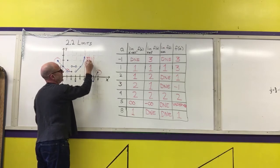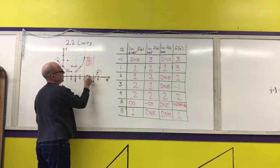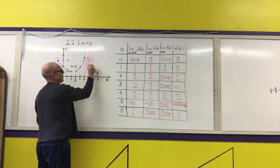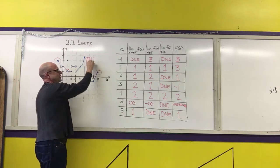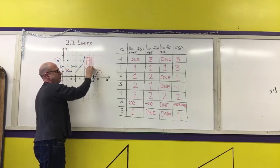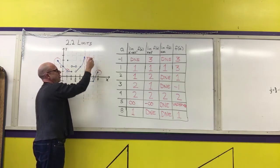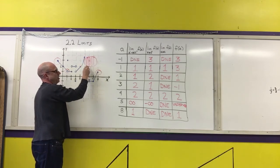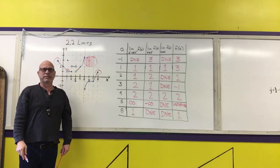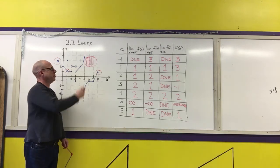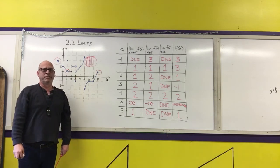For example, if we want the limit as x approaches 6 on an oscillating section of a graph, as we keep coming in, the graph bounces up and down between two different values. The definition of a limit requires approaching a single value. If the graph oscillates as you approach the point you're evaluating, you would say the limit does not exist, and the reason is due to the graph oscillating.